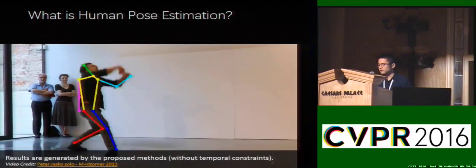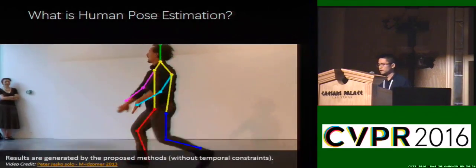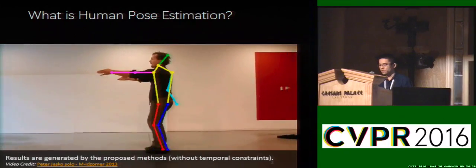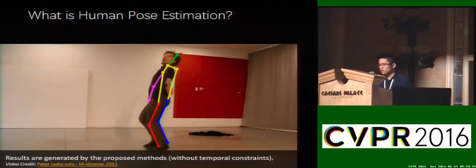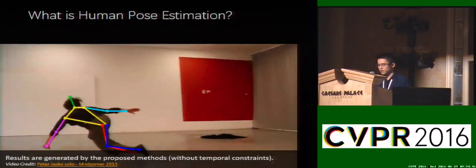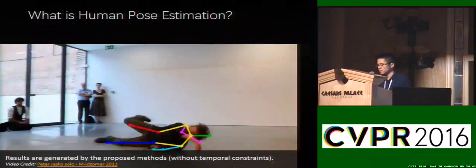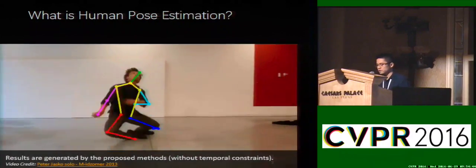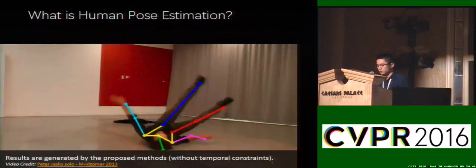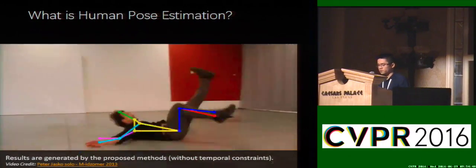What is human pose estimation? Basically, given an image or video, the goal of human pose estimation is to recover the body joint positions of articulated limbs, as demonstrated in this video.